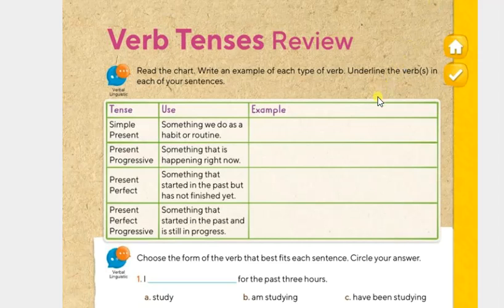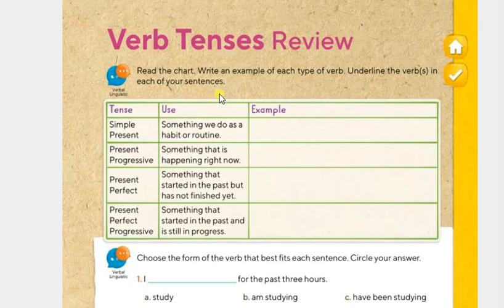This is language, and we continue with verb tenses review. The exercise says: read the chart. Write an example of each type of verb using the verbs in each of your sentences. Underline the verbs in each of your sentences. So we have this.